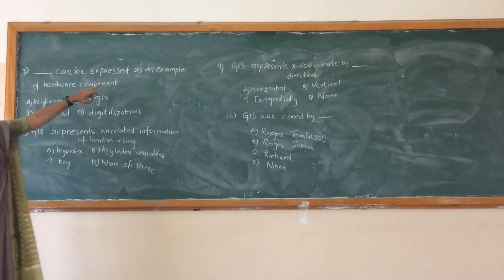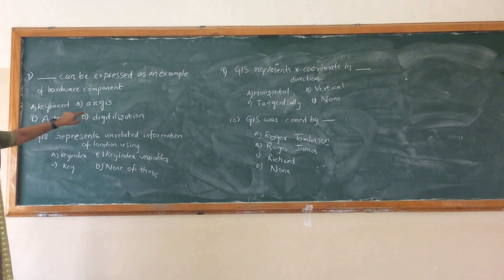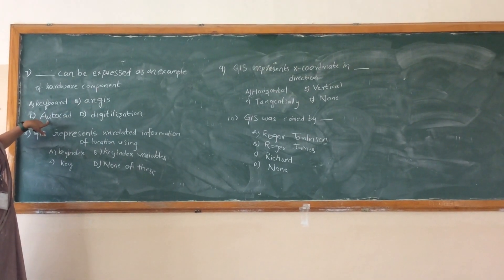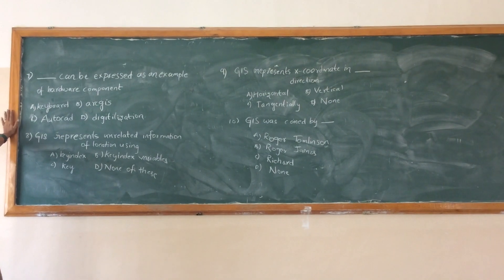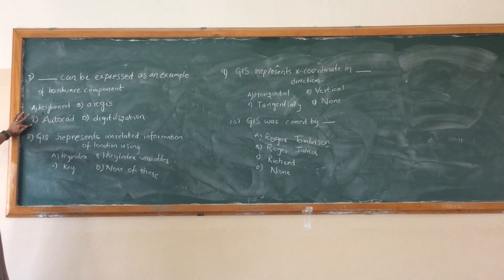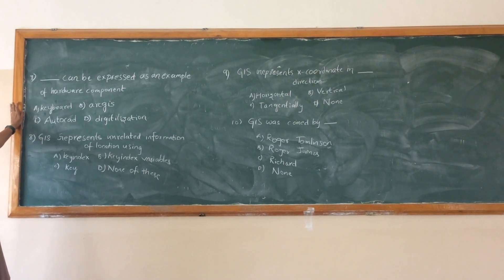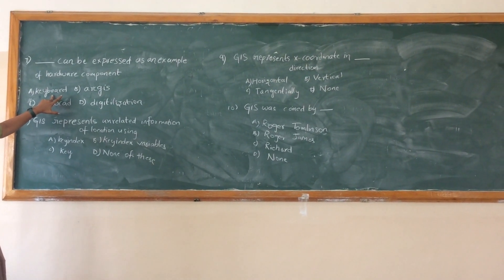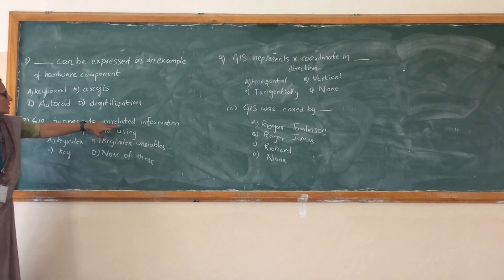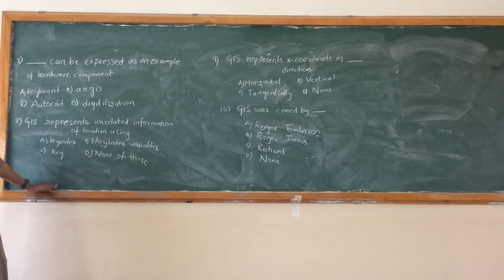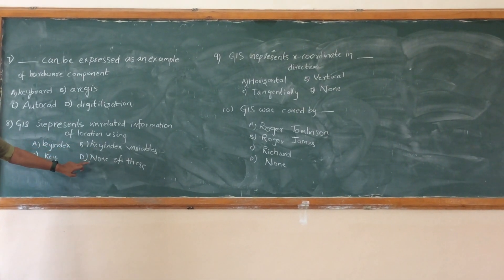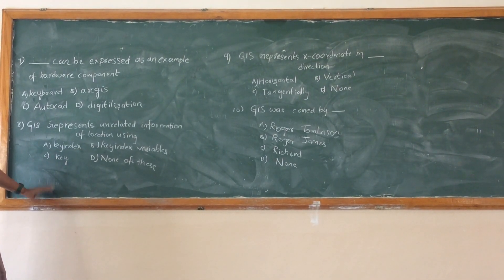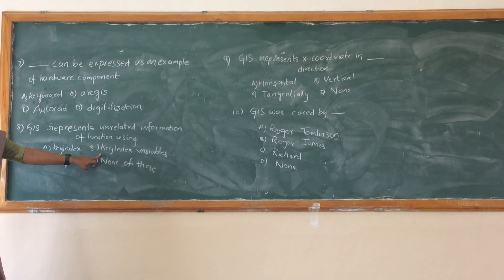Dash can be expressed as an example of hardware component. Whether pre-word can be expressed or RGCs can be expressed or AutoCAD can be expressed or key code or RGCs are digitization. Which is? Key code. Key code can be expressed as an example of hardware component. The next one is GIS represents information using key index variables and none of these. Key index variables is the correct answer.